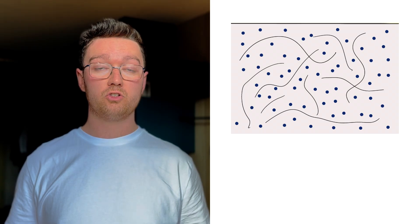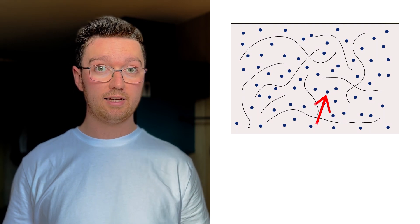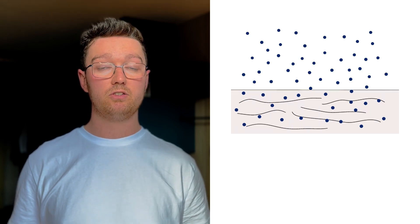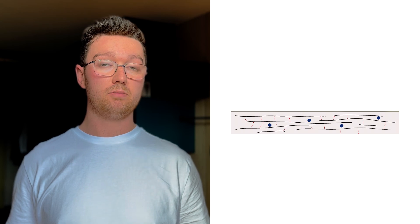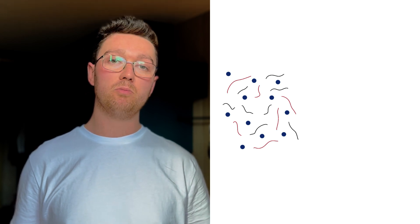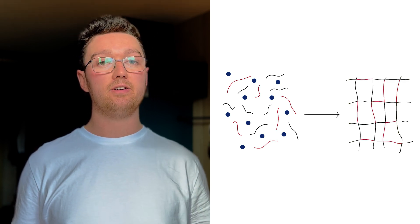That leaves us with two options for the drying process of a coating. Option one: we have large resin molecules that we mix with smaller molecules — called solvents — to make it liquid. These solvents evaporate during drying, leaving behind the large, immobile resin molecules. Option two: we start with smaller resin molecules that react with each other to form larger, immobile, solid molecules. Coatings following option one are called physically drying paints; those following option two are called chemical curing paints.